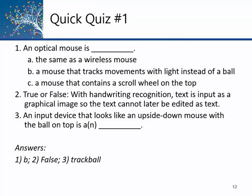True or false: with handwriting recognition, text is input as a graphical image so that it cannot later be edited as text. That's false. Handwriting recognition does convert handwriting to text — that's the whole goal, to replace typing letter for letter by allowing you to sign or handwrite the letters. Question three: an input device that looks like an upside-down mouse with a ball on top — that's a trackball. It's not very common, but it's a physical device that sits on the desk and doesn't move. Instead of moving it around, you spin the ball, which has the same functionality as moving the mouse. In limited desk space, there might be reasons why that's better.